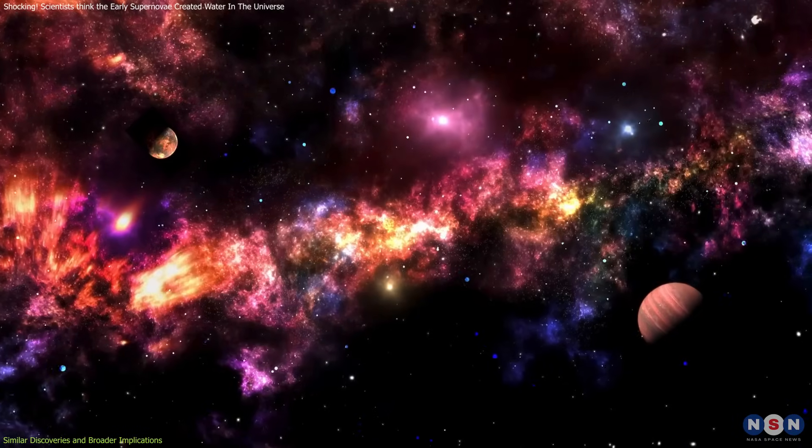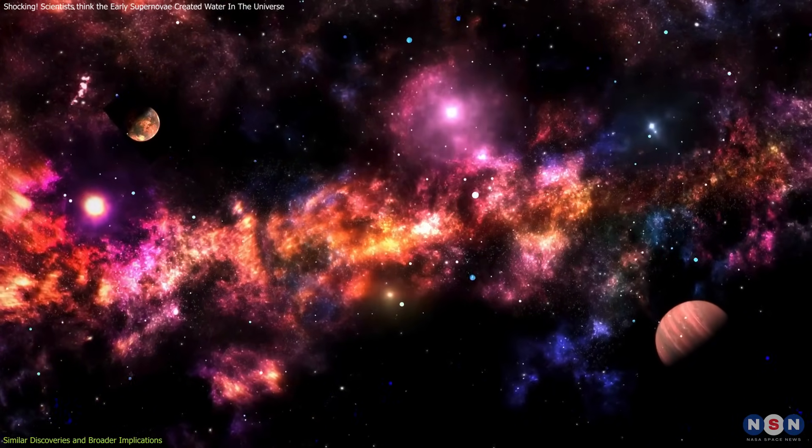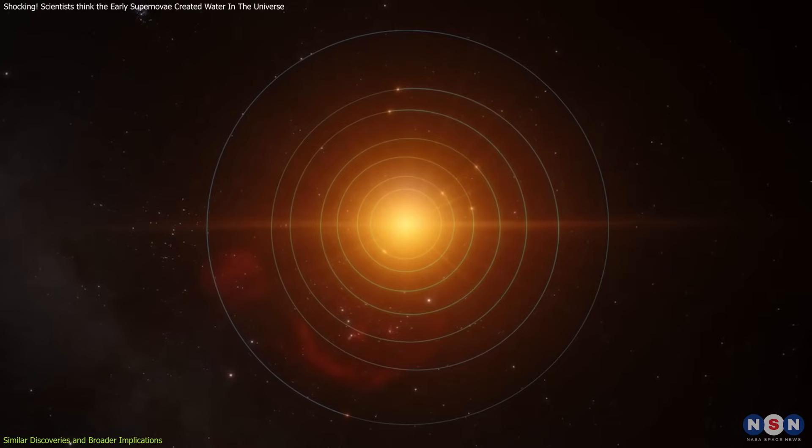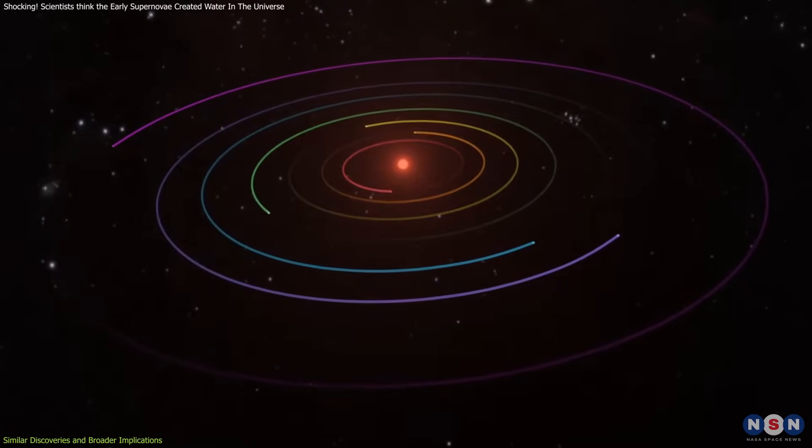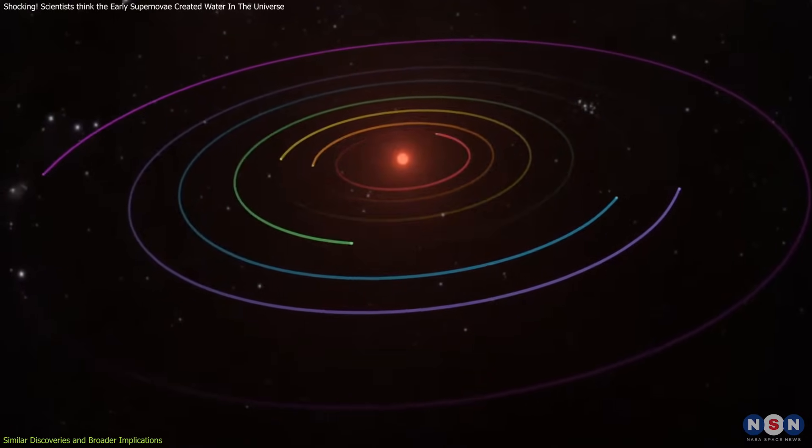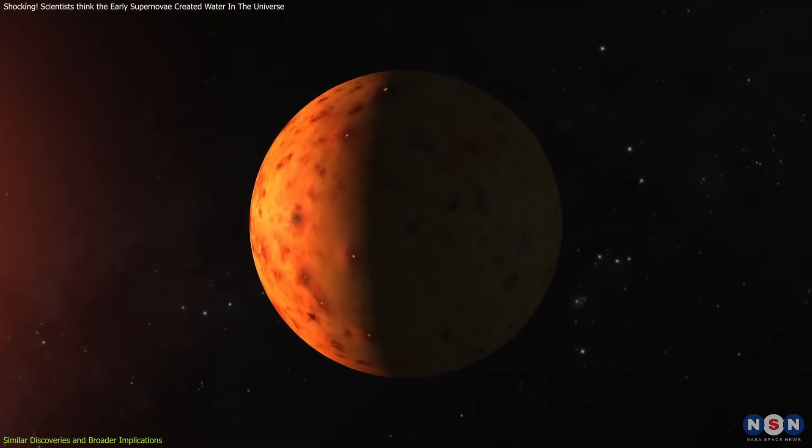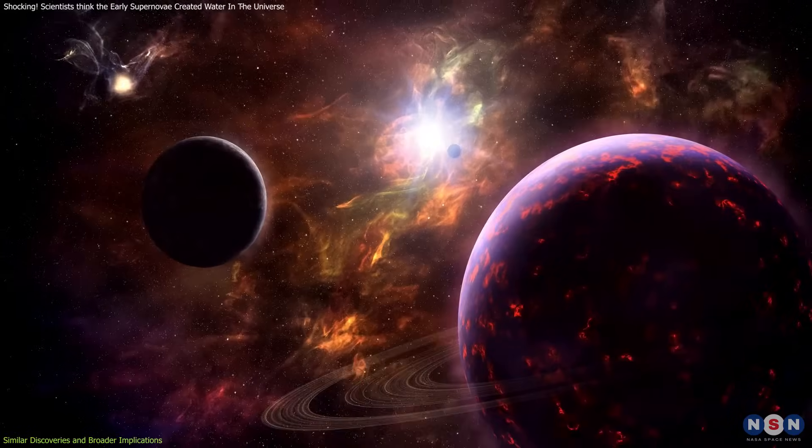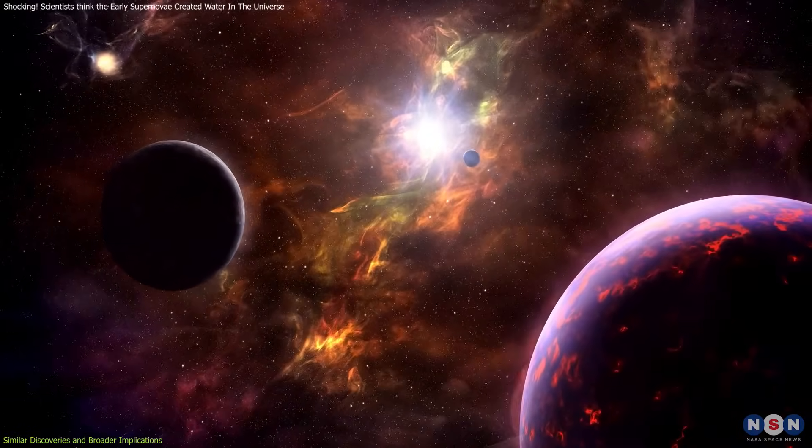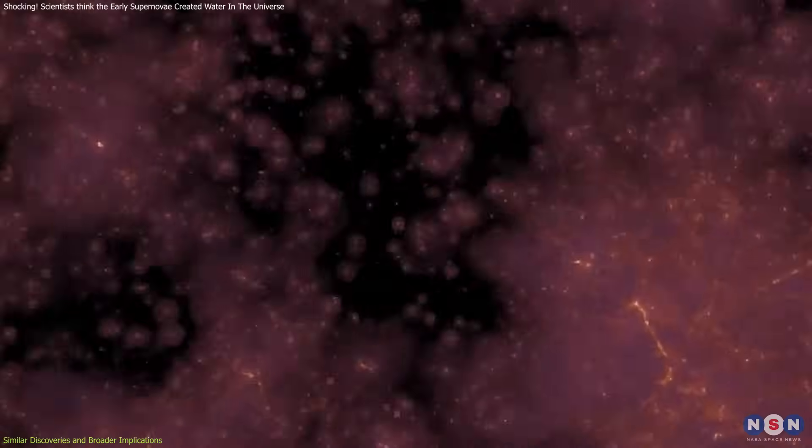The connection between these early findings and the discovery of exoplanets is another exciting aspect. In systems like TRAPPIST-1, where multiple Earth-like planets orbit within a habitable zone, researchers can compare the conditions for water formation with the environments modeled for the early universe. The parallels could help determine whether life-supporting conditions existed elsewhere from the universe's earliest epochs.